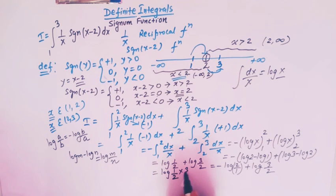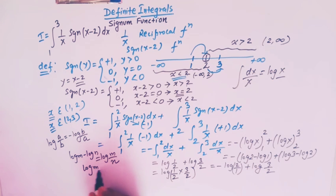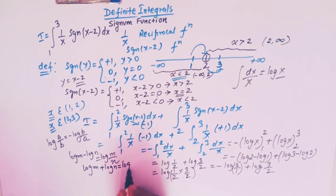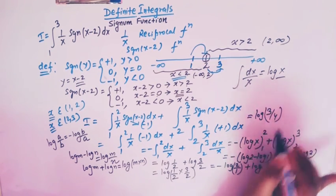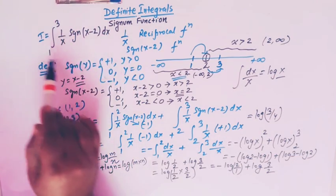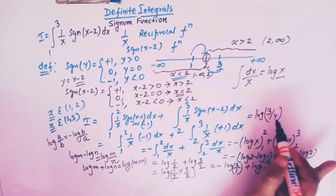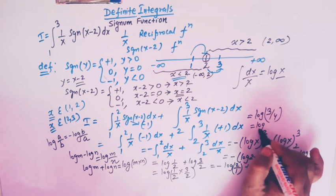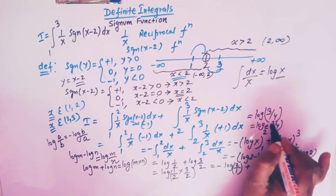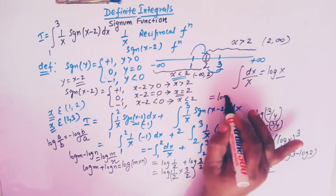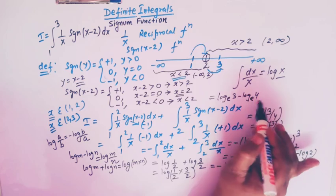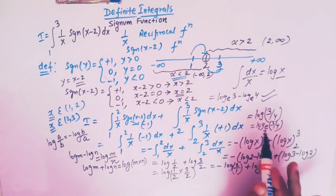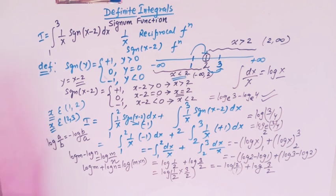Using the property log m plus log n equals log(m times n), we combine: log(1/2) plus log(3/2) equals log(1/2 times 3/2) equals log(3/4). So the value of the given integral is log(3/4), which can also be written as log base e of 3 minus log base e of 4.